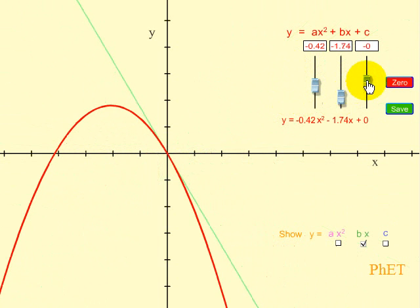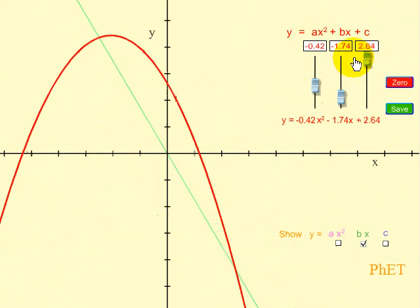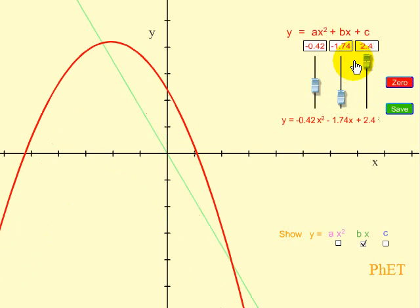And then finally, as we saw before, this line just moves the parabola up and down. So that's the quadratic equation, and the effects of A, B, and C.